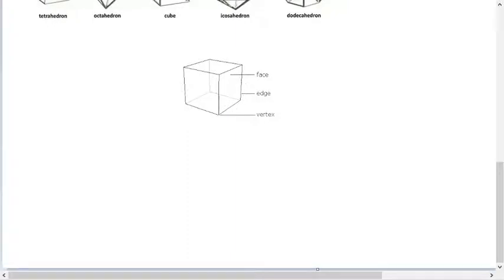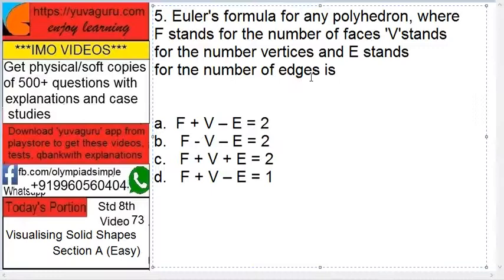For Euler, now this you'll have to learn because this is the answer: F plus V minus E equals to 2. That is a very important formula. It is very much required in any polyhedron. So faces plus vertices minus edges equals to 2.